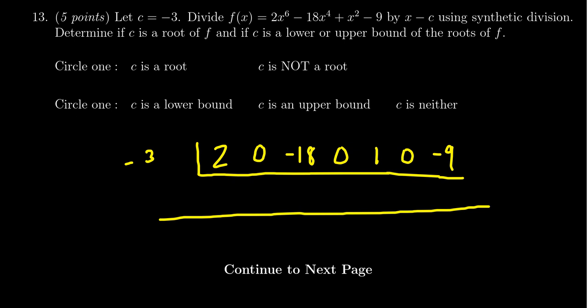And then we're dividing by -3. I should say we're dividing by x minus negative 3, so x plus 3. But you put the intercept here, the root, which in this case is -3.